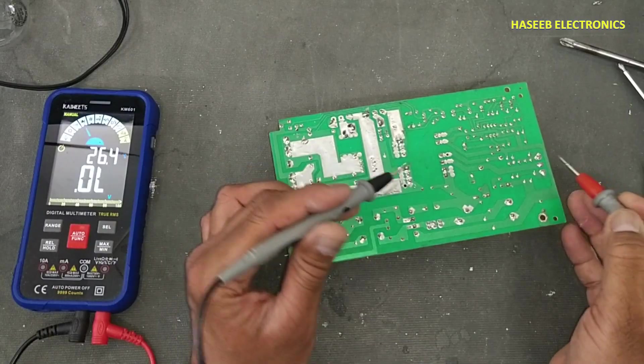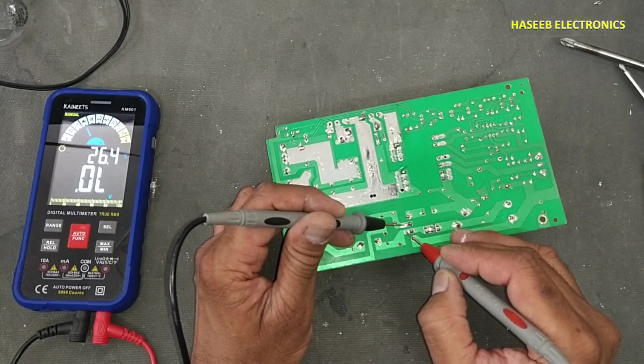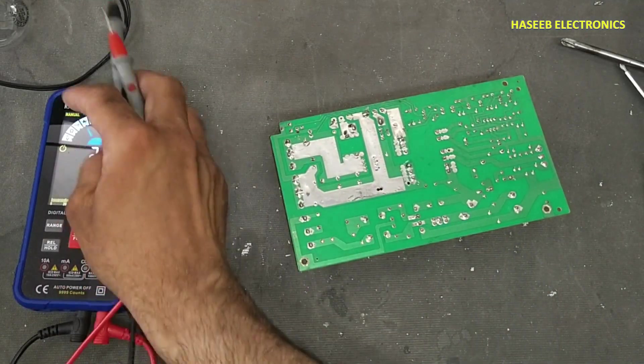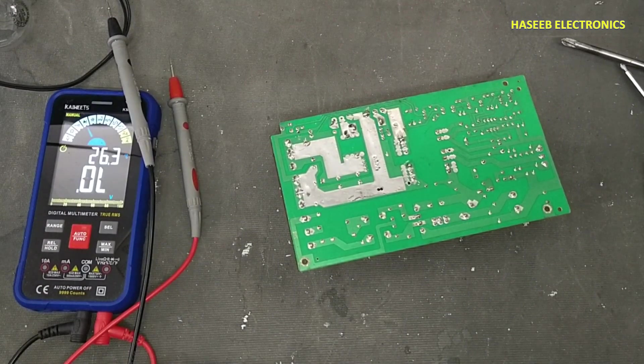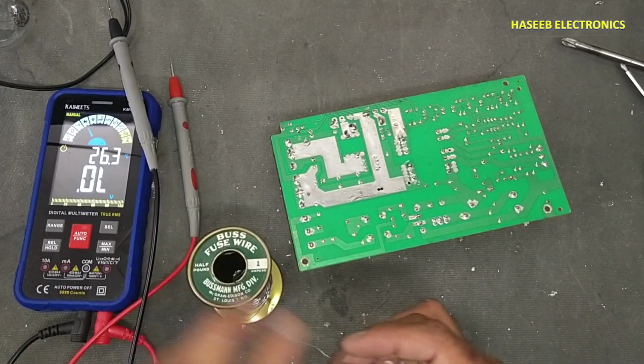DC rail is safe, MOSFET is safe. And if we check AC input side of the bridge rectifier, it is open circuit. That means there is no short circuit here. So first for our test purpose I will use this one ampere fuse wire and we will check the circuit condition using series lamp.